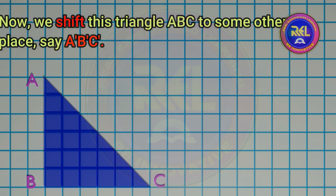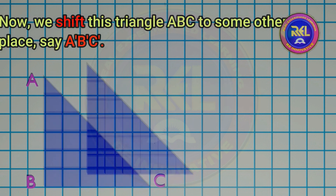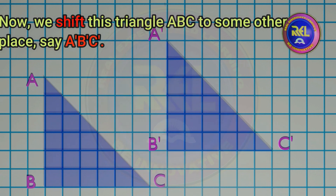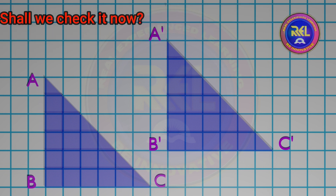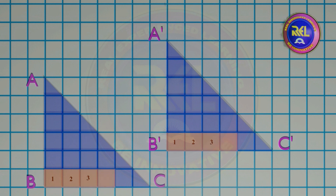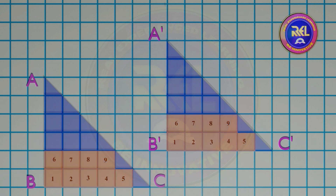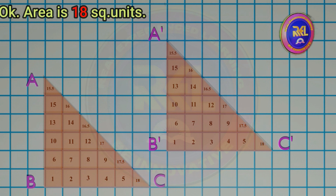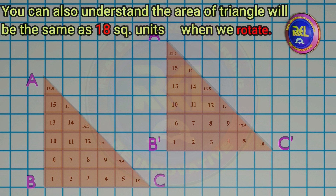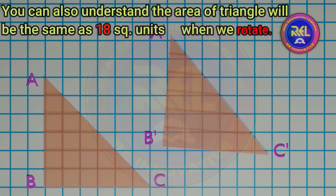Now, we shift this triangle A, B, C to some other place, say A dash, B dash, C dash. You can ensure that the area of triangle A dash, B dash, C dash is also 18 square units. Counting confirms: area is 18 square units.